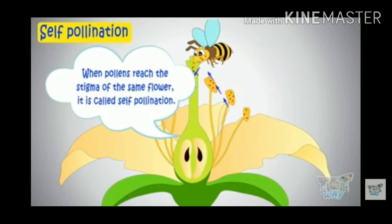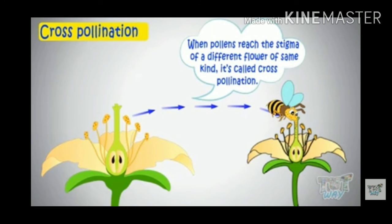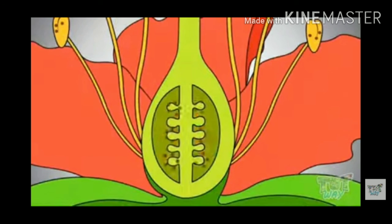This process of pollination is of two types. First is self-pollination. Self means the same plant — the pollination occurs between the same flower in which the male and female parts are present in the same flower. Second is cross-pollination, which occurs between two different flowers of the same species. This is known as cross-pollination.